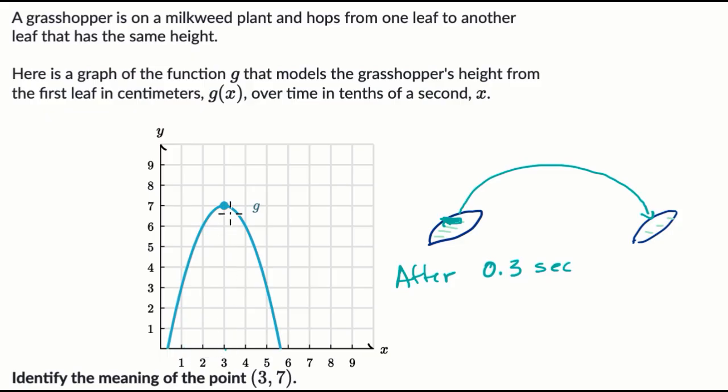This is telling us that the grasshopper is seven centimeters in the air. So after three tenths of a second, the grasshopper is seven centimeters in the air.